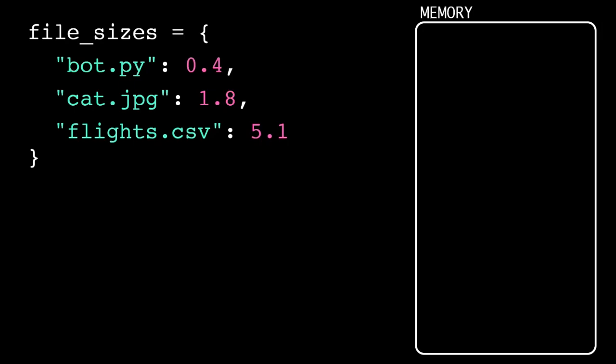How does the computer store a dictionary in memory? Here, we have a dictionary where the keys are the names of files, and the values are the sizes of those files, in megabytes.